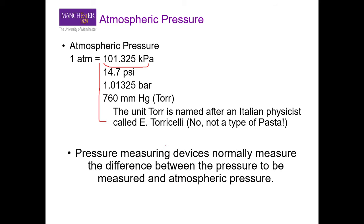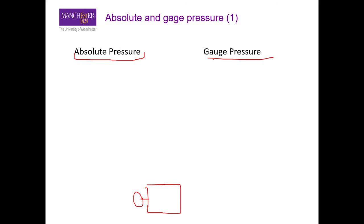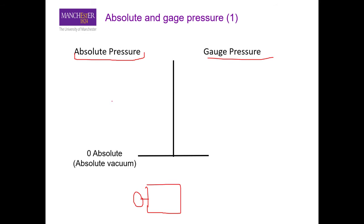As engineers, we normally use devices that measure the pressure difference between the point of interest and atmospheric pressure, rather than the absolute pressure. Based on this, there are two forms of pressure: absolute pressure and gauge pressure. Absolute pressure is measured with reference to absolute vacuum — a situation where all molecules have been removed from a container. Measuring pressure relative to that system gives absolute pressure. One ATM, the pressure we feel on our bodies at Earth's surface, is an absolute pressure.